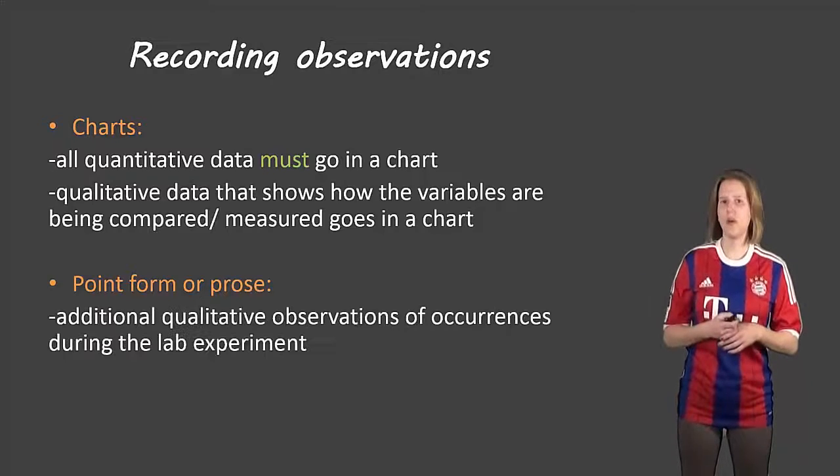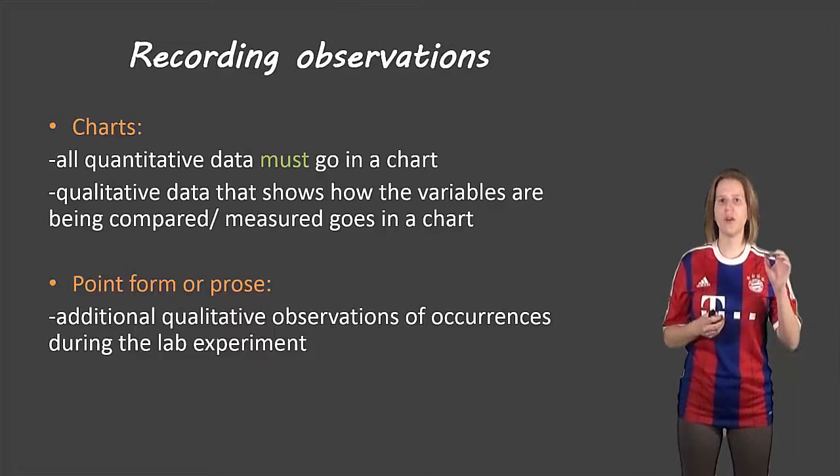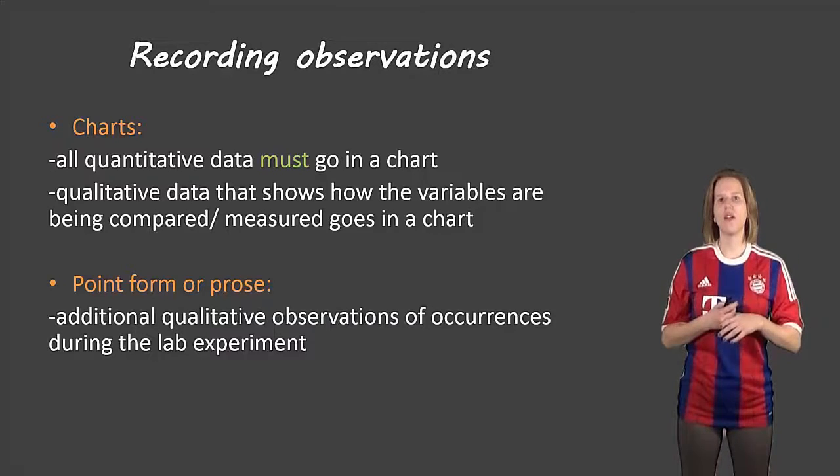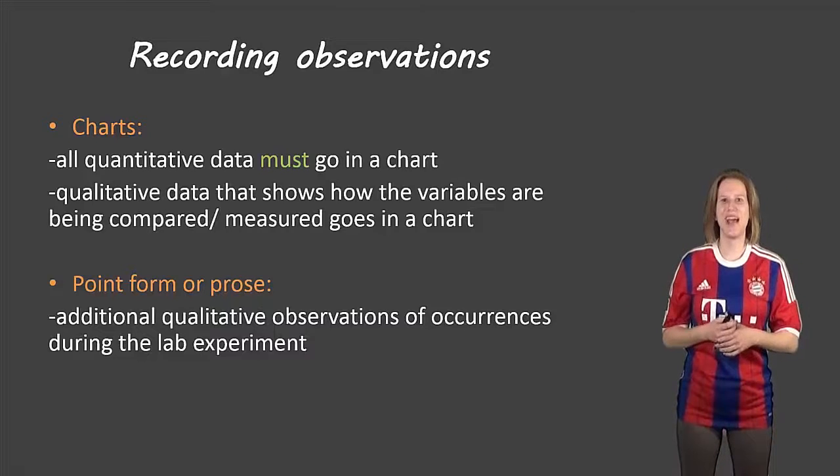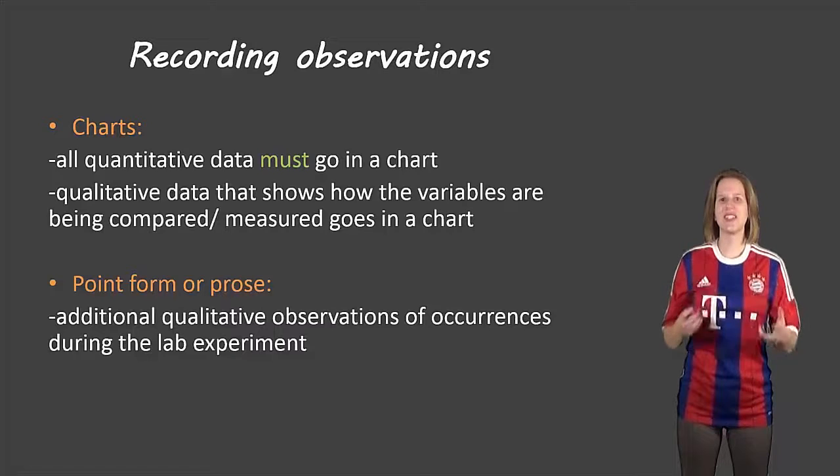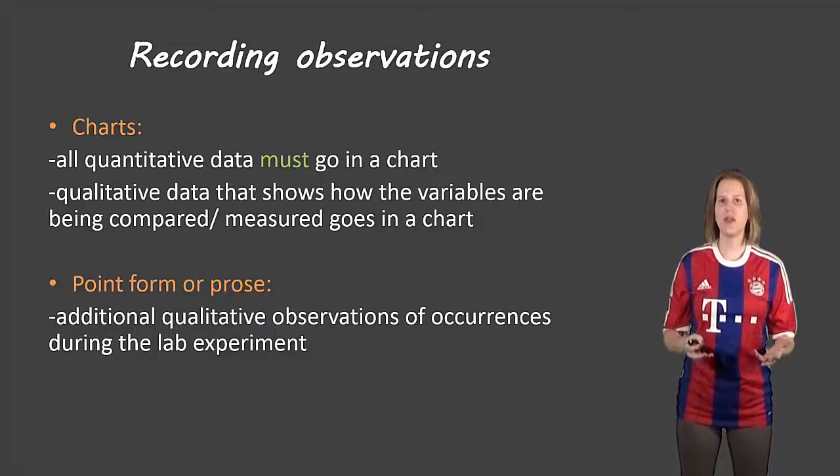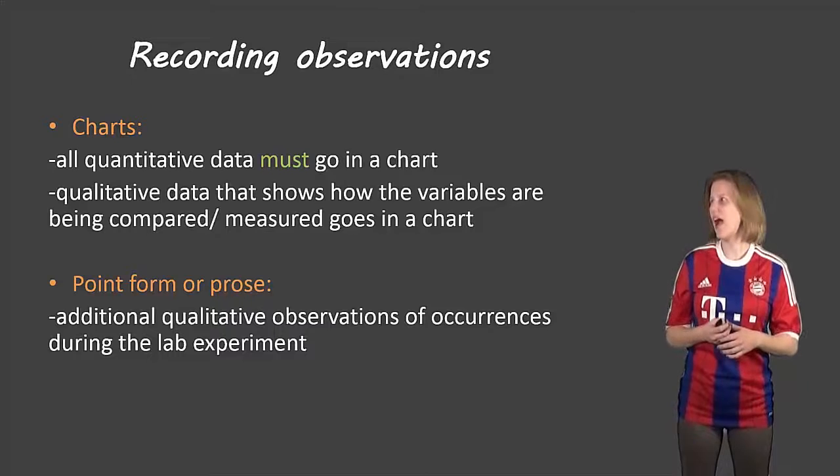Paragraph form or point form will be any additional details that you notice. So it could be point form if they're small little things or if they're major catastrophes that happen during your lab report, you might want to write paragraphs about that. So these are just additional pieces of information. They're not the primary thing that you're looking for in the lab.